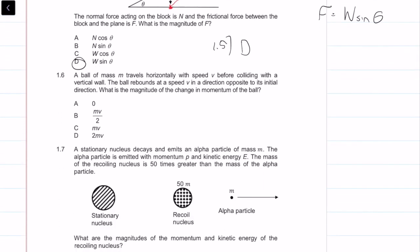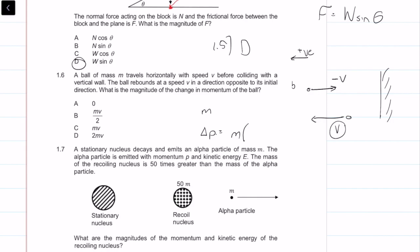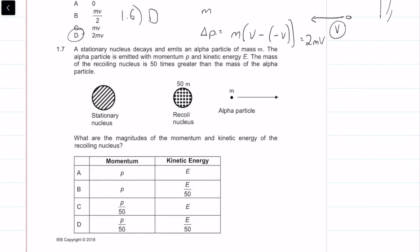Question 1.6: a ball of mass m travels horizontally at speed v before colliding with a vertical wall and rebounds at speed v in the opposite direction. Taking the original direction as positive, v_initial = v and v_final = −v. Change in momentum: Δp = m(v_final − v_initial) = m(−v − v) = −2mv. The magnitude is 2mv, so the answer is D.